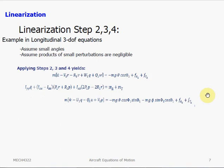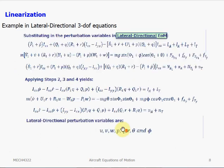In steps two and three, we apply the small angle assumption and assume that the products of small perturbations are zero. With these assumptions, we manage to strike out a lot of the variables in the equation. Finally, in step four, we separate and remove the steady state variables — those with subscript one — so we are left with only the perturbed variable terms. Here's an example of the same linearization steps but for the three-degree-of-freedom lateral-directional equations.